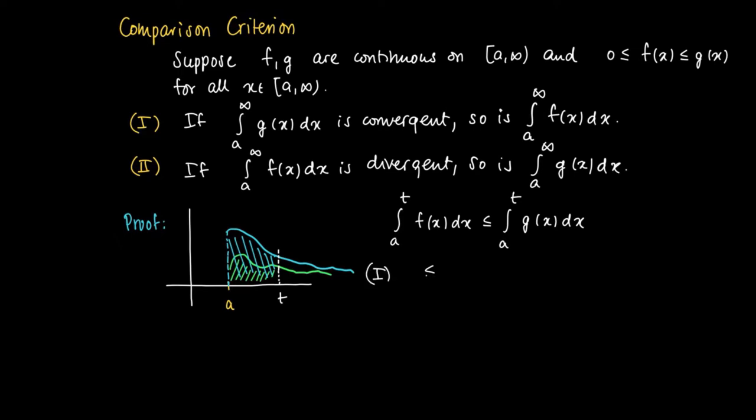If we look at the first case, if the integral from a to infinity g(x)dx is convergent, then we know that the integral from a to t to arbitrary t g(x)dx is smaller than the integral from a to infinity g(x)dx. Since g is non-negative on t to infinity, then it adds a non-negative amount.